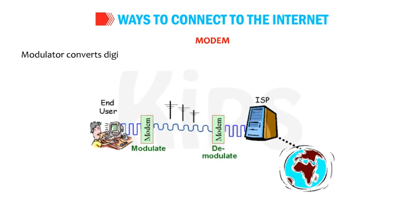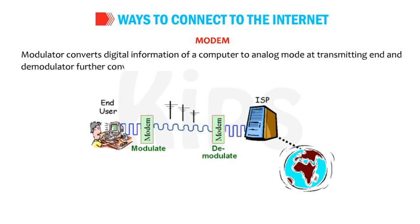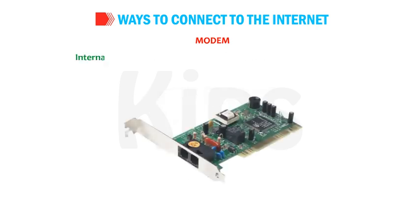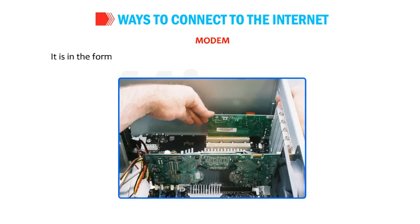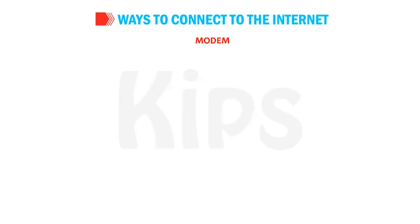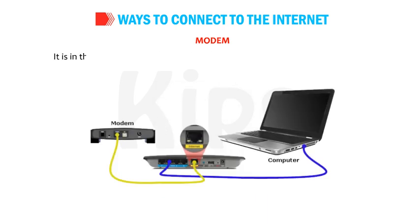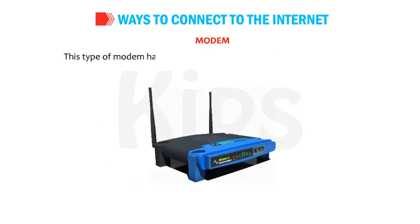The modulator converts digital information of a computer to analog mode at the transmitting end, and the demodulator converts back the analog signals to digital at the receiving end. Modems can be classified as: internal modem — a device already installed in the computer, in the form of a card inserted into one of the slots on the main board. External modem is installed outside the CPU, in the form of a box normally connected to the USB port.